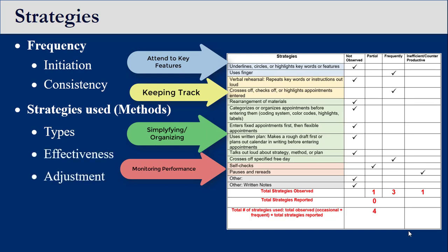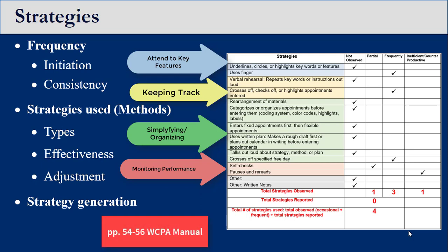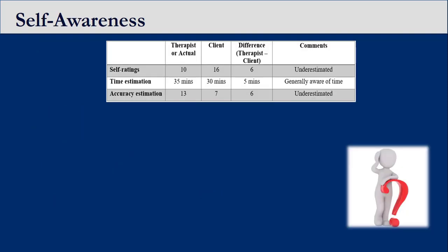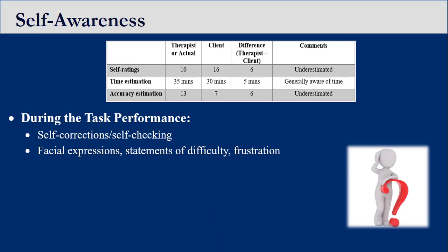The effectiveness and ability to adjust strategy usage as needed is also documented. Strategy generation is described based on the ability to identify alternate strategies in the after-task interview. Pages 54 to 56 in the WCPA manual further discuss analysis of strategies used. During the task, awareness can be indicated through self-recognition of errors, correction of errors, and through facial expressions, statements of difficulty, or frustration.